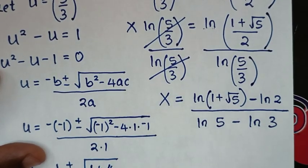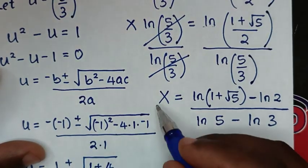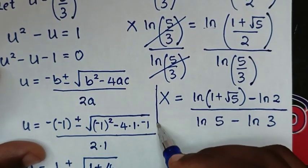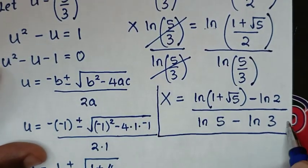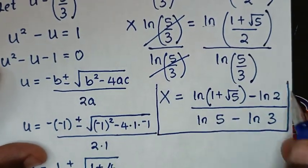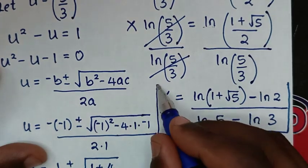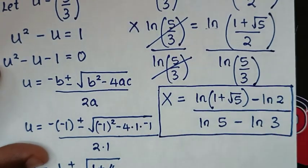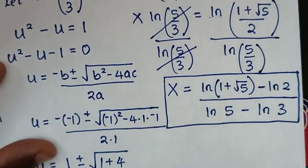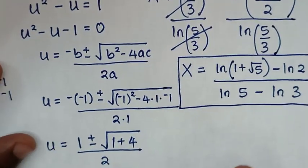This is the final answer: x = [ln(1 + √5) − ln 2] / [ln 5 − ln 3]. Thank you for watching.